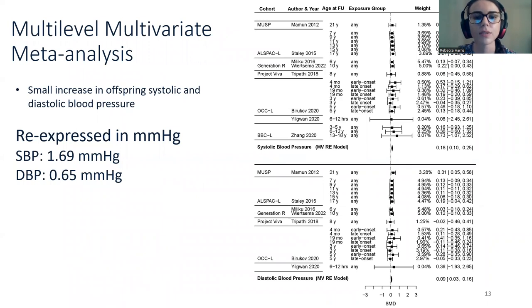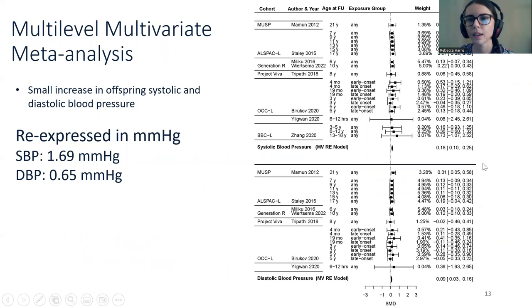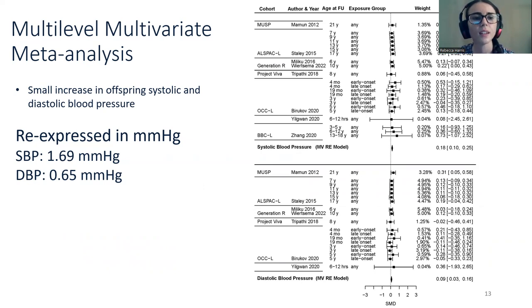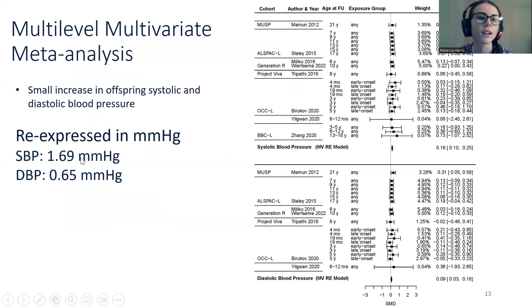Here are the results from our multilevel meta-analysis as shown in the forest plot, with systolic blood pressure and diastolic blood pressure standardized mean differences pooled. There were only small increases in both systolic and diastolic blood pressure. When re-expressed in millimetres of mercury, there was a 1.69 mmHg difference in systolic blood pressure and a very small 0.65 mmHg difference for diastolic blood pressure.